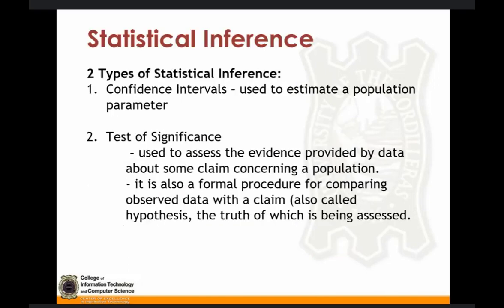First, let us tackle what is statistical inference. There are two types of statistical inference: confidence intervals and test of significance. Confidence intervals are used to estimate a population parameter. In your test of significance, it is used to assess the evidence provided by data about some claim concerning a population. It is also the formal procedure of comparing observed data with a claim, which is also called your hypothesis. A claim is a statement about a parameter like the population proportion, denoted by p, or the population mean, denoted by u. The results of significance tests are expressed in terms of probability that measures how well your data and the claim agree.